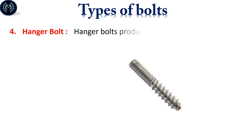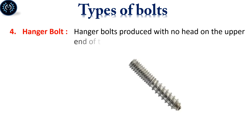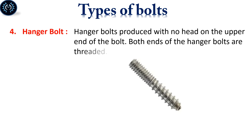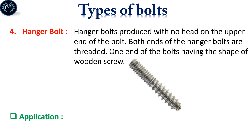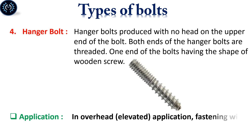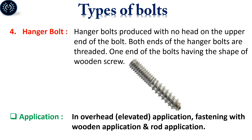Hanger bolts are produced with no head on the upper end of the bolt. Both ends of the hanger bolt are threaded, with one end having the shape of a wood screw. Hanger bolts are used in overhead and elevated applications, fastening with wooden applications and rod applications.